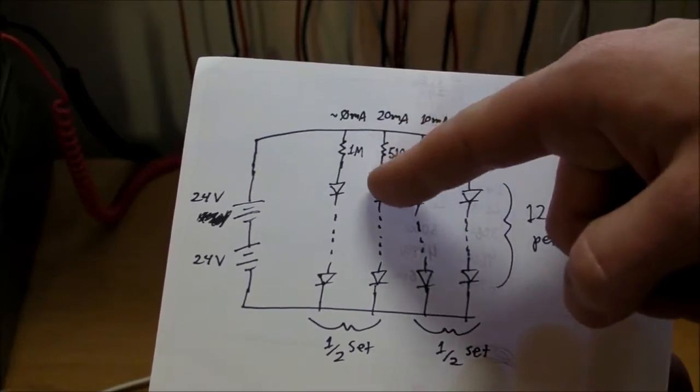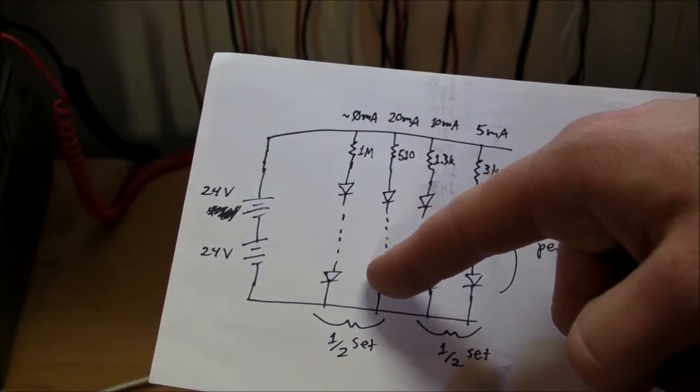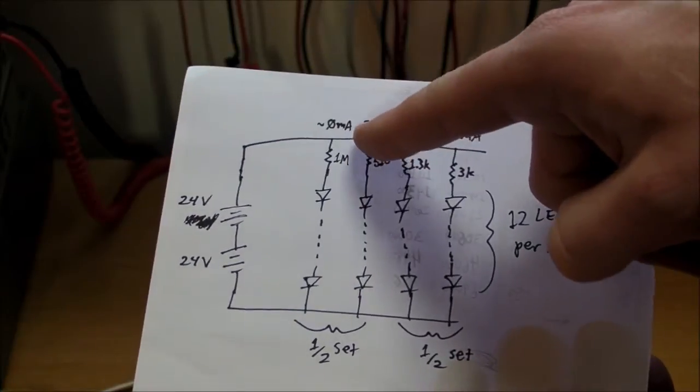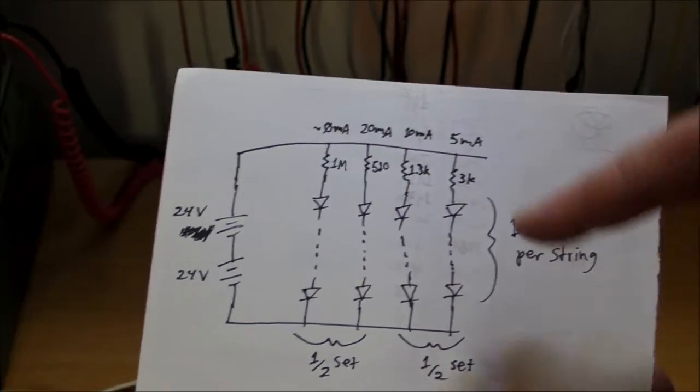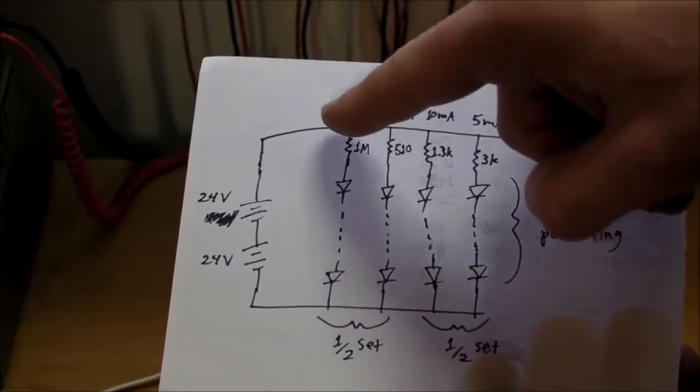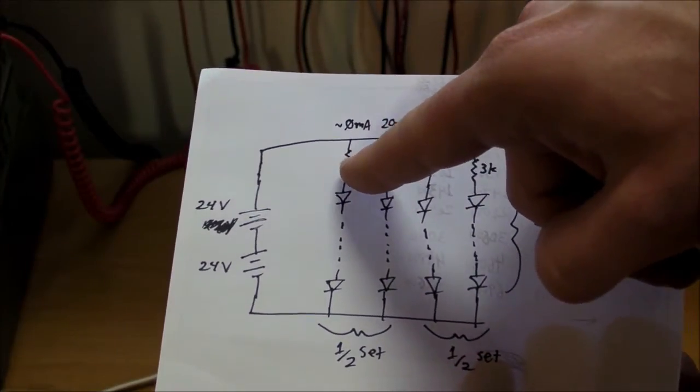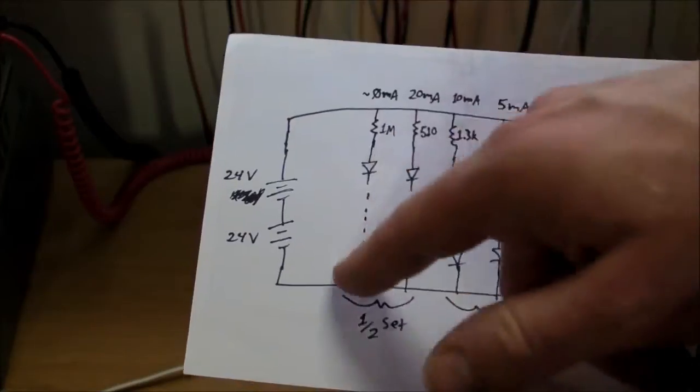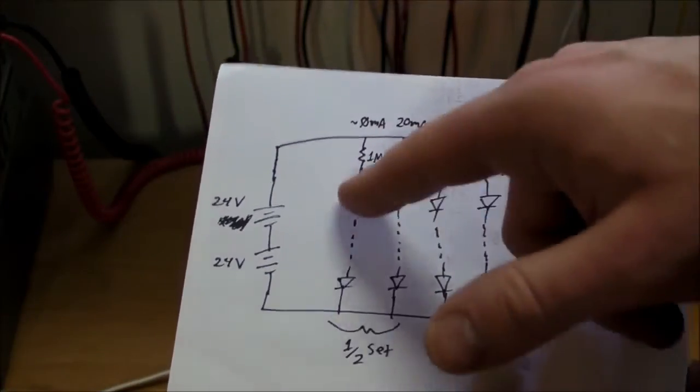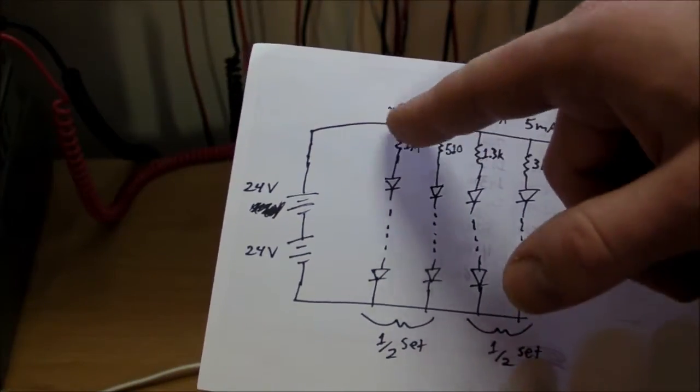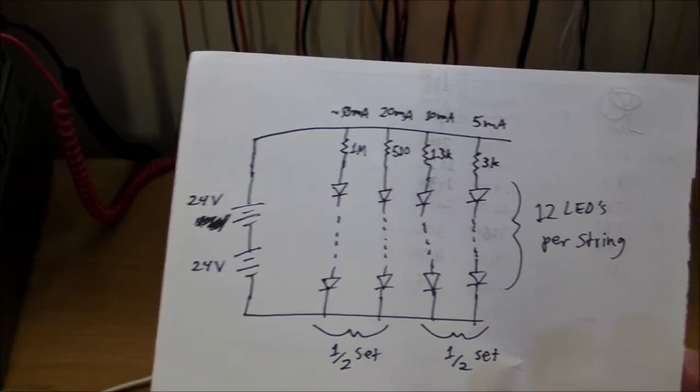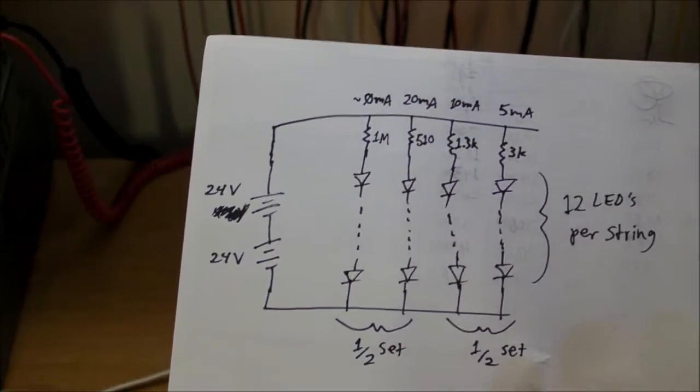I've got them going at four different levels of current just to test them to see if they dim over time. So I've got one set of twelve LEDs here at twenty milliamps, another one at ten, another one at five, and another one at roughly zero milliamps. I've got a one megaohm resistor there, just didn't want to leave it completely open circuit.